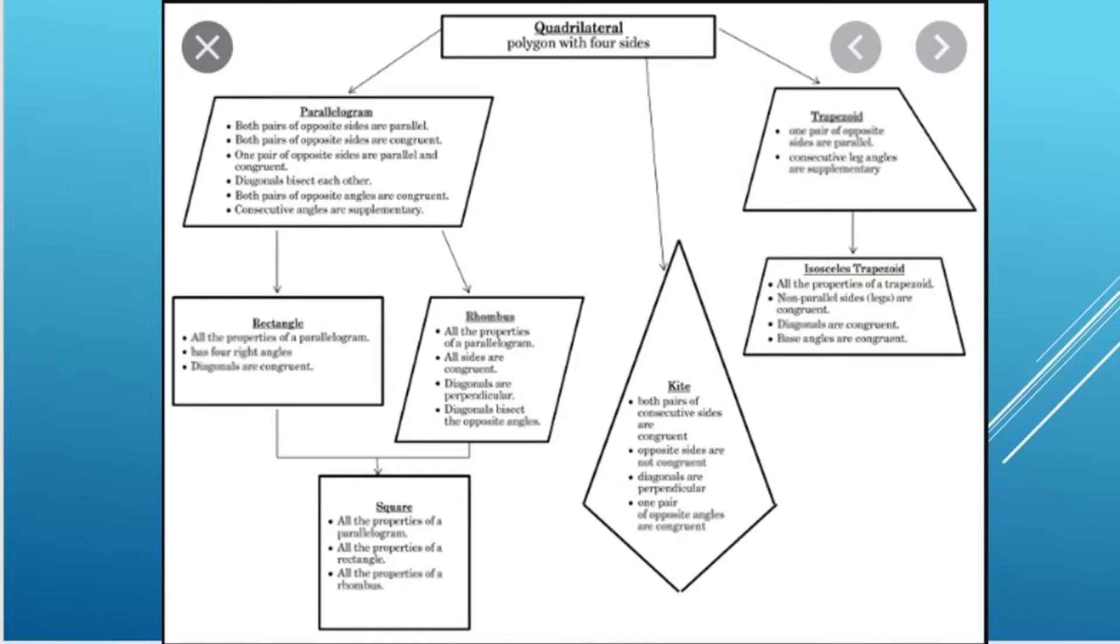A square is a quadrilateral, a parallelogram for two sets of parallel sides, a rhombus for having all equal sides, and a rectangle because it has four right angles. So there can be multiple classifications for each quadrilateral.